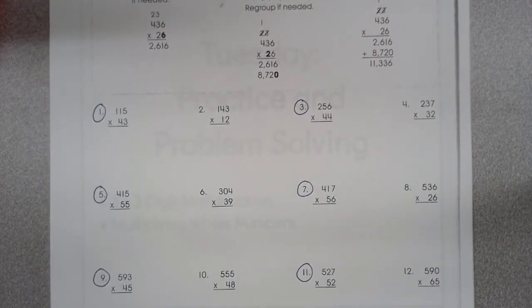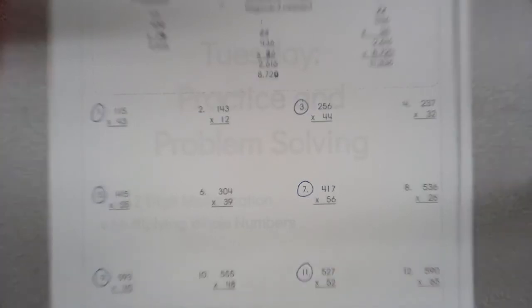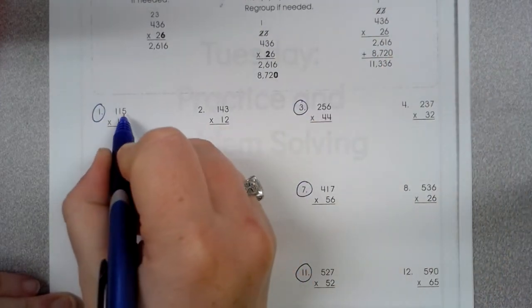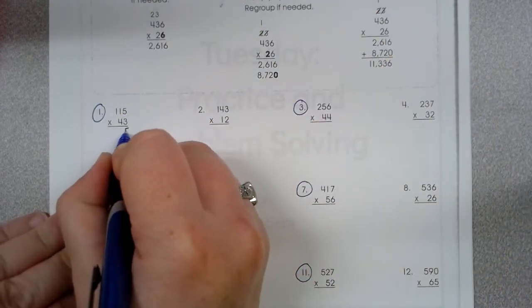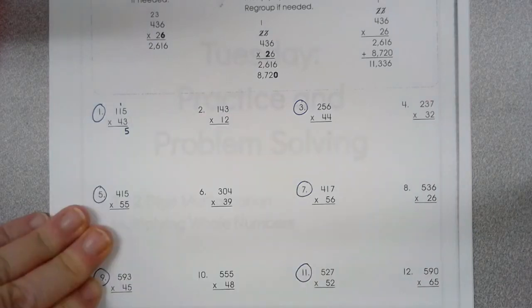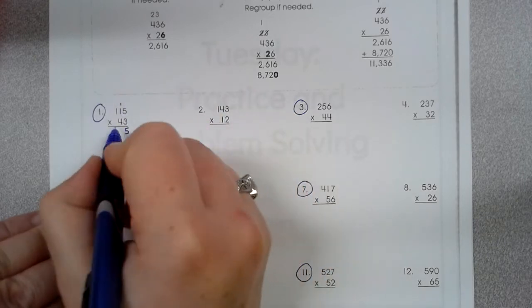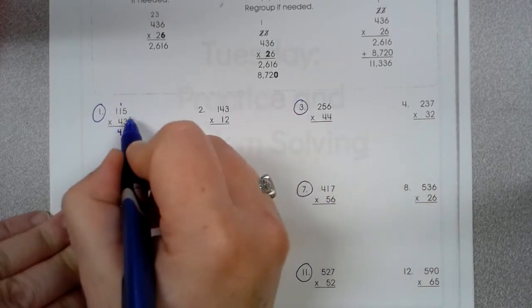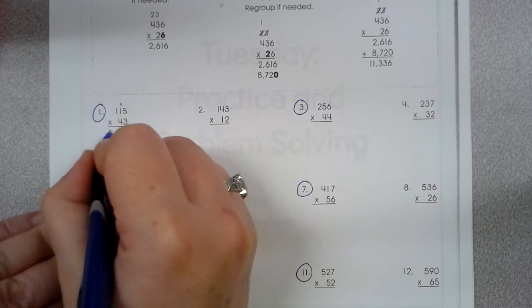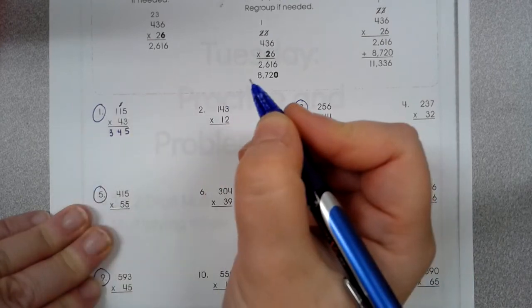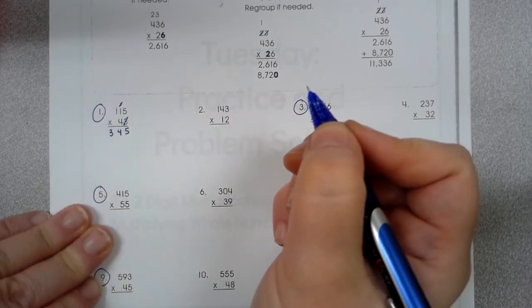So remember, when we multiply, we start in our 1s place. And we go from there. So I have 115 times 43. So 3 times 5 is 15. So I put my 5 here, carry my 1. 3 times 1 is 3, plus this 1 up here is 4. 3 times 1 is 3. I'm going to x that 1 out because I'm not going to need it and get rid of my 3 because I've already used it.